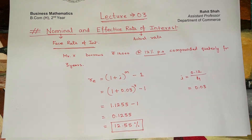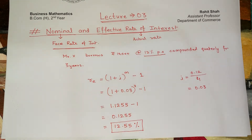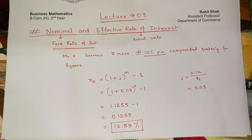Now the question arises: can the nominal and effective rate of interest be the same? Yes, they can be, if compounding is done per annum. But if compounding is done semi-annually, quarterly, monthly, or continuously, then the effective rate of interest will be quite higher than the nominal rate of interest.